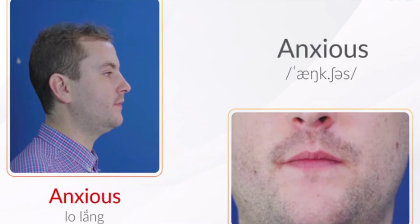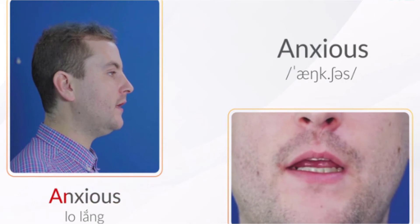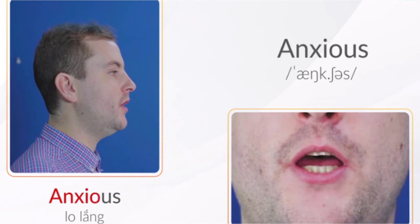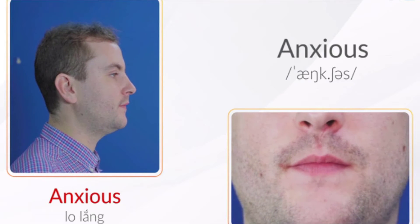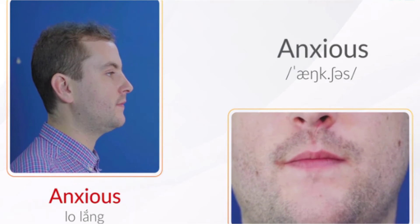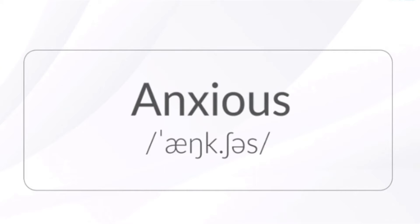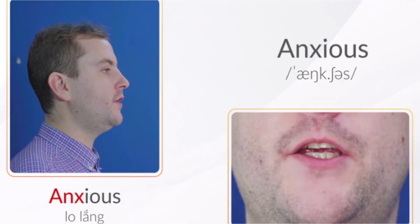Anxious. Từ này có hai âm tiết, trọng âm rơi vào âm tiết đầu tiên các bạn nhé. Âm tiết thứ hai bắt đầu bằng âm Sh. Âm này các bạn nhớ chu môi, không cắn răng và thổi mạnh hơi nhé. Các bạn cũng đừng quên phụ âm cuối: cắn chặt răng và cho hơi ra thôi nhé.